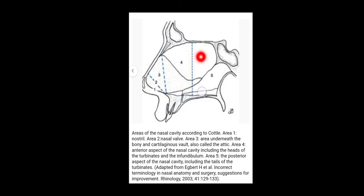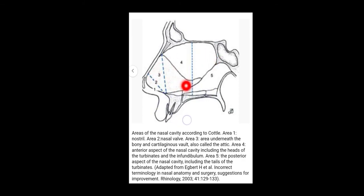And finally, area number five is the posterior aspect of the nasal cavity, including the tails of the turbinates. Those are the five areas as proposed by Cottle.